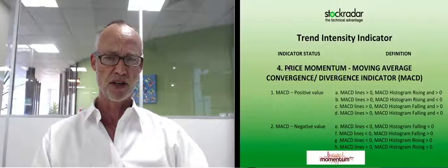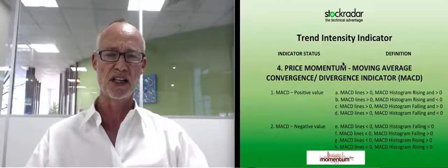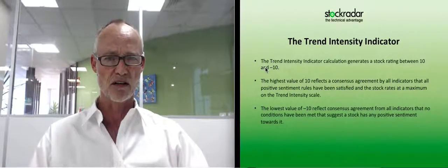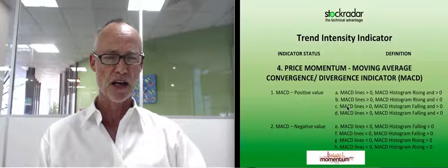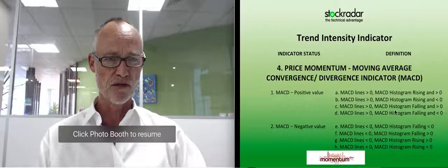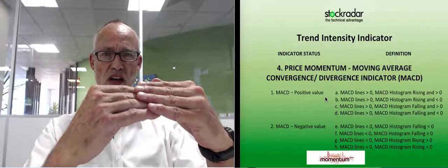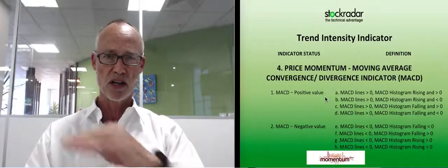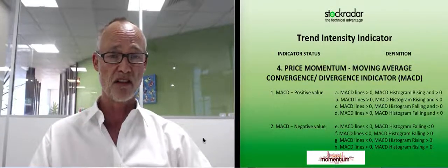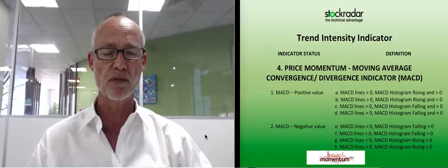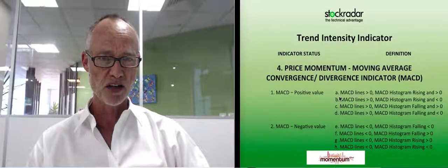The last component is the price momentum indicator — I use the Moving Average Convergence Divergence indicator, the MACD. There are different variations such as relative strength, momentum, rate of change, but I use the MACD. I've defined eight different states. For the positive buy values: if the MACD is above the zero line it gets a positive value; if the lines are below the zero line it gets a negative value. The best rating I can get is when the MACD lines are above zero, the histogram is rising, and it's also above zero. That gets weighted into the index as the most positive value, with different variations that are slightly less strong.